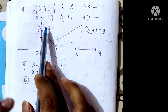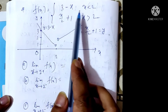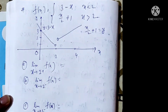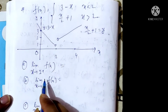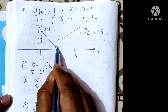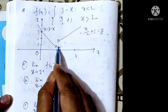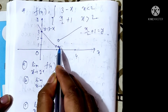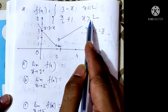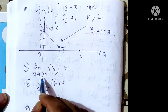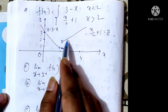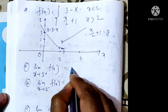New example: let f(x) equal 3 minus x when x less than 2, and x divided by 2 plus 1 when x greater than 2. Find the limit as x tends to 2⁺ of f(x). Approaching from the right means x is in the region greater than 2, so we use f(x) = x/2 + 1. The value at x = 2 gives 2/2 + 1 = 2. So the limit as x tends to 2⁺ of f(x) equals 2.